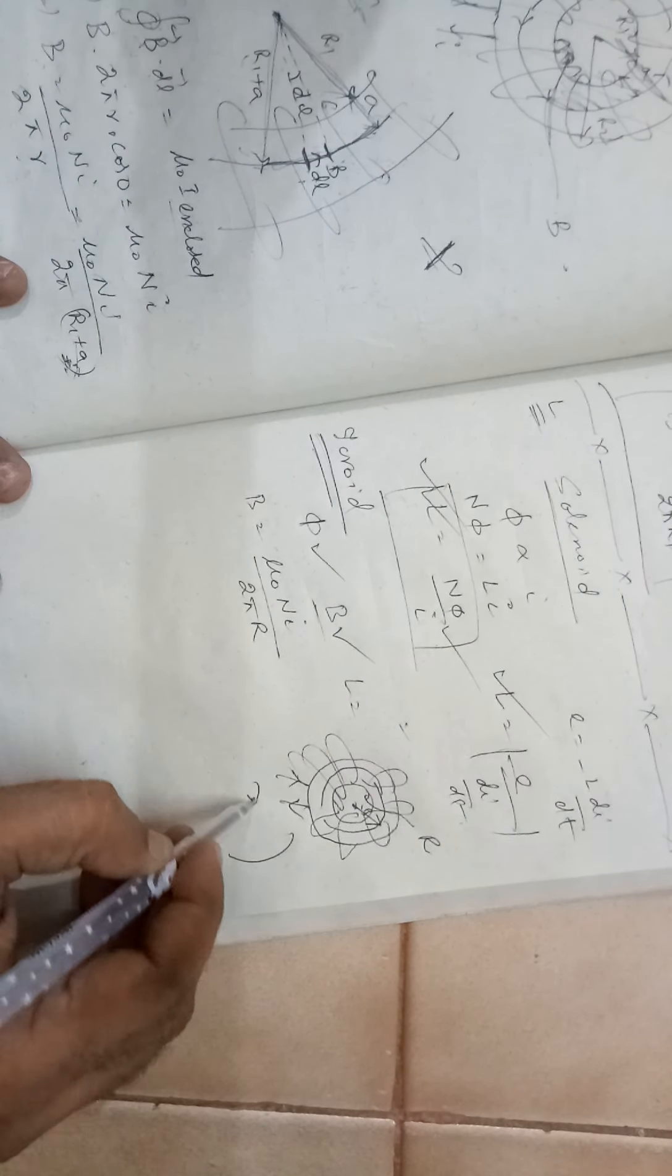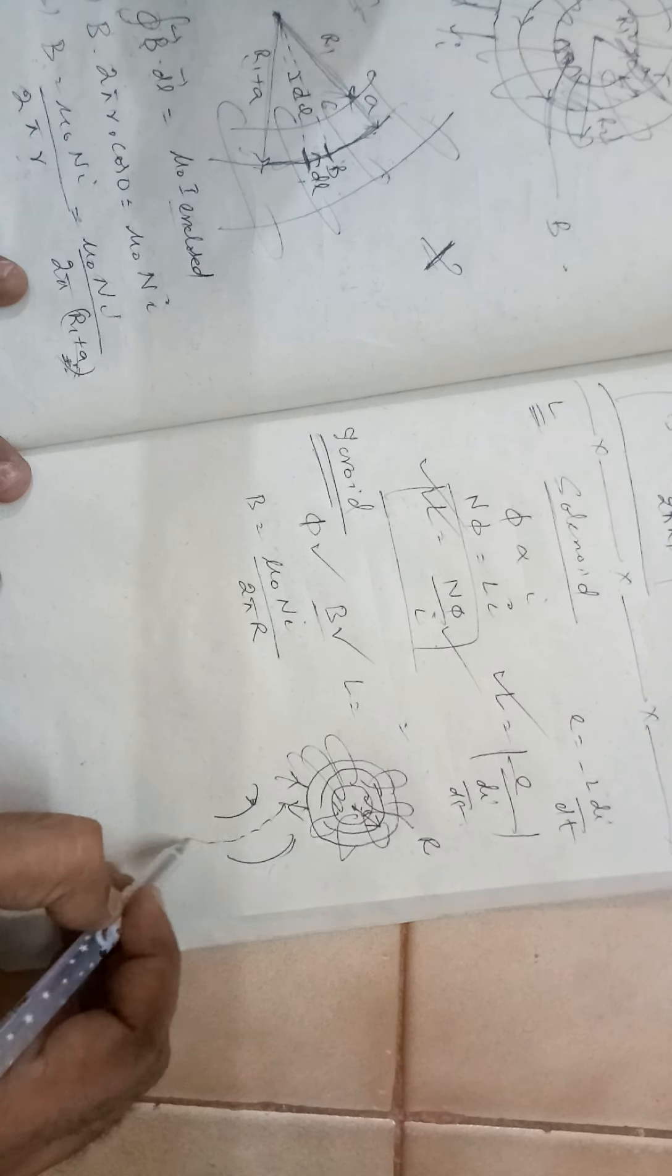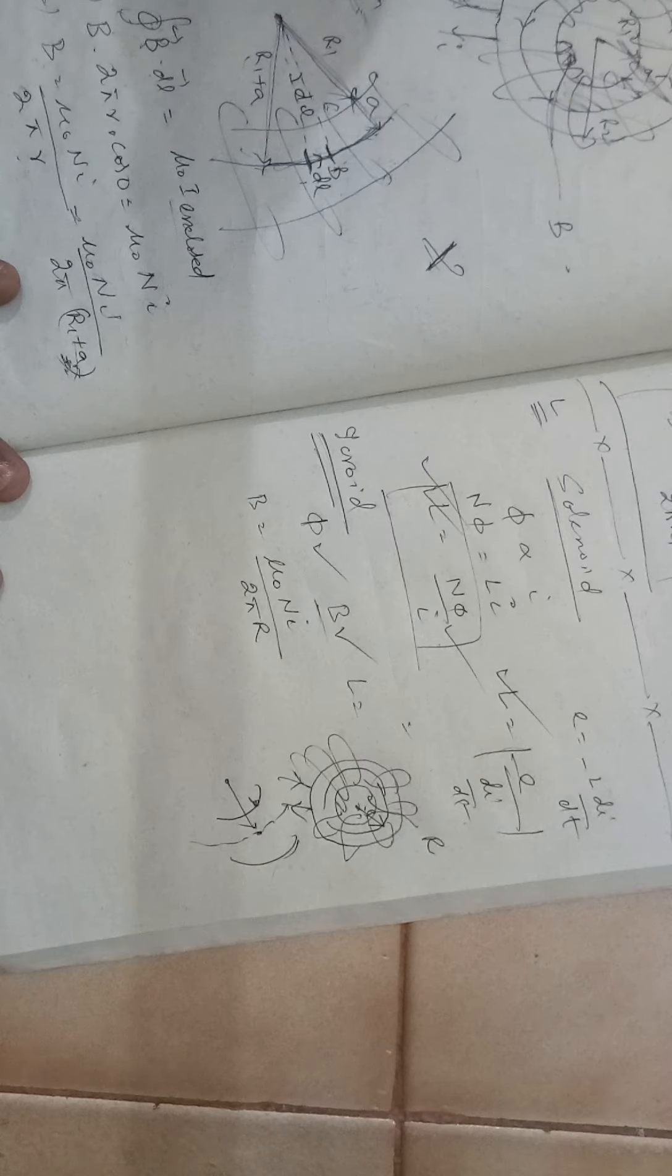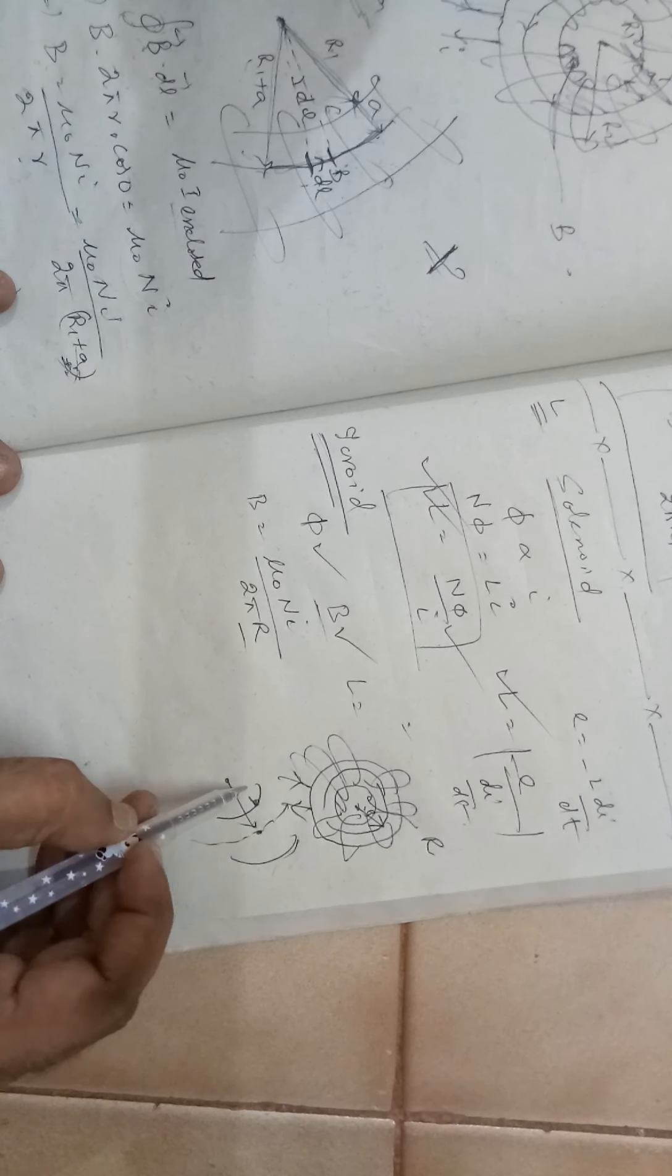That is, this is inner radius, this is outer radius. I am taking R value here. This R value is this value.